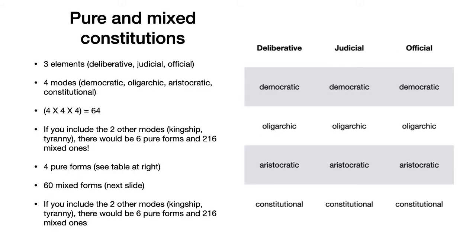To make this method general, we distinguish three elements of any constitution: a deliberative part, a judicial part, and an official part. Then we look at the way each of those can be in one of four modes: democratic, oligarchic, aristocratic, or constitutional. That means there will be 64 total possible combinations — four modes for each of three elements. If we were to add the two other modes, kingship and tyranny, there would be six total forms and 216 total mixed ones.